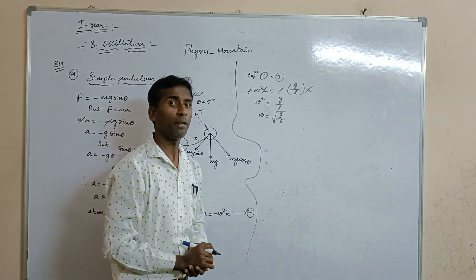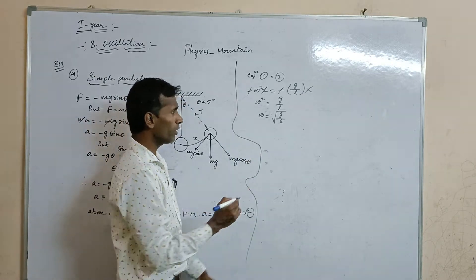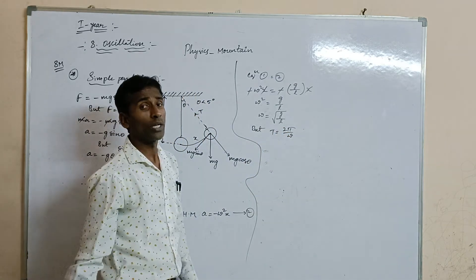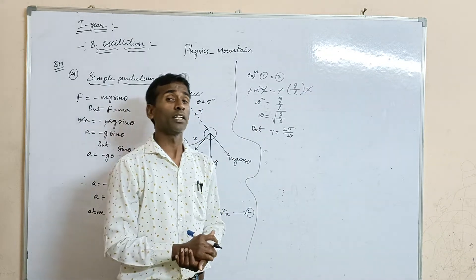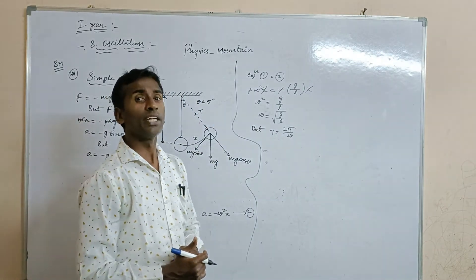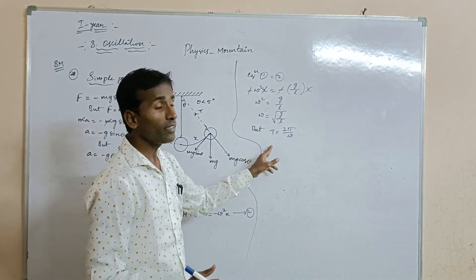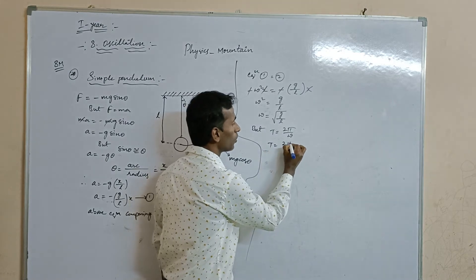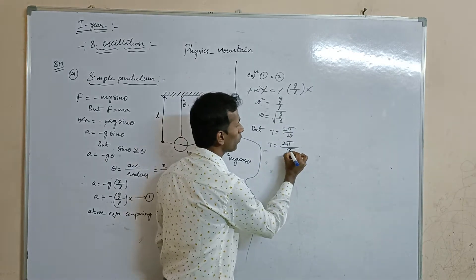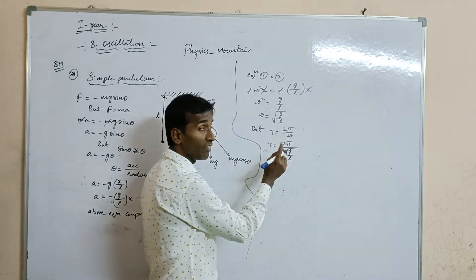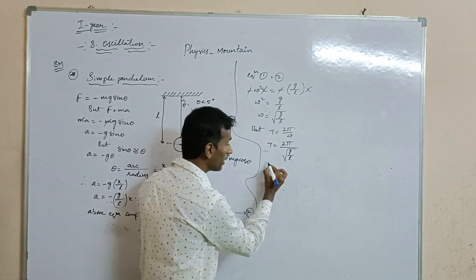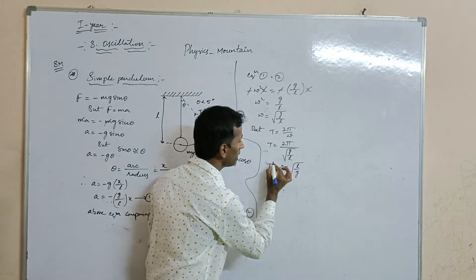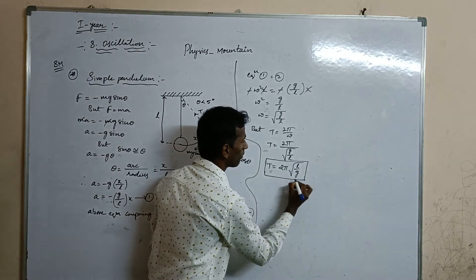Omega is now found. The time period T is the time taken for one complete oscillation. T = 2π/ω. Substituting ω = √(g/L) into the denominator, we get T = 2π × √(L/g). This is the time period formula for a simple pendulum.